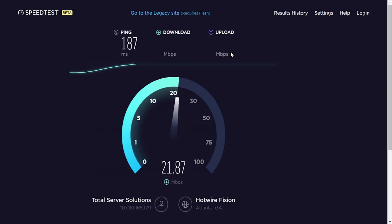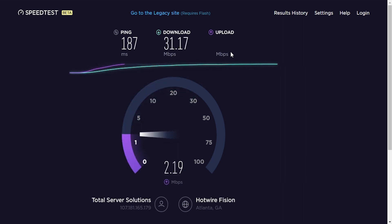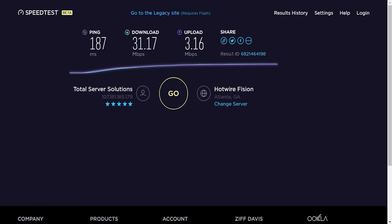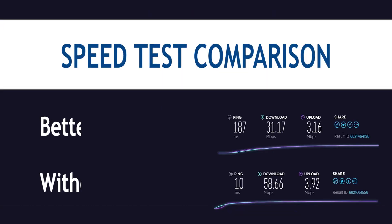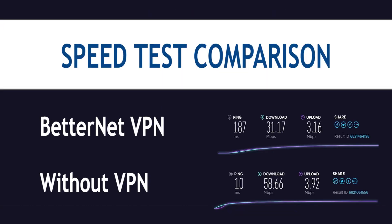Let's see how fast this server is. We have a ping of 187 milliseconds, download speed is 31.17 megabits per second, and upload is 3.16 megabits per second — so that's a pretty fast server. I am pleased with the result. Here it is for comparison. One thing to keep in mind is that the connection is always going to be slower with a VPN, sometimes more, sometimes less. I tested several servers but this one worked best for me.